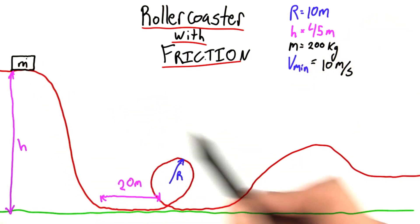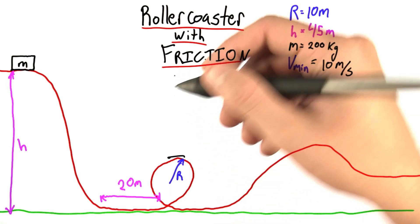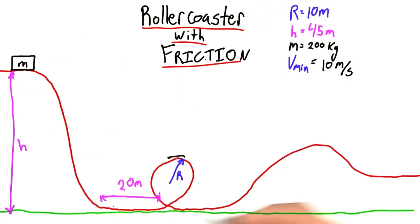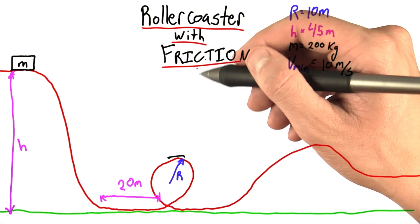And remember, the cart needs to be going at least 10 meters per second as it goes through the top of the loop. This question isn't so much about designing a roller coaster. Here it's already designed. Now I want to know about maintaining a roller coaster.